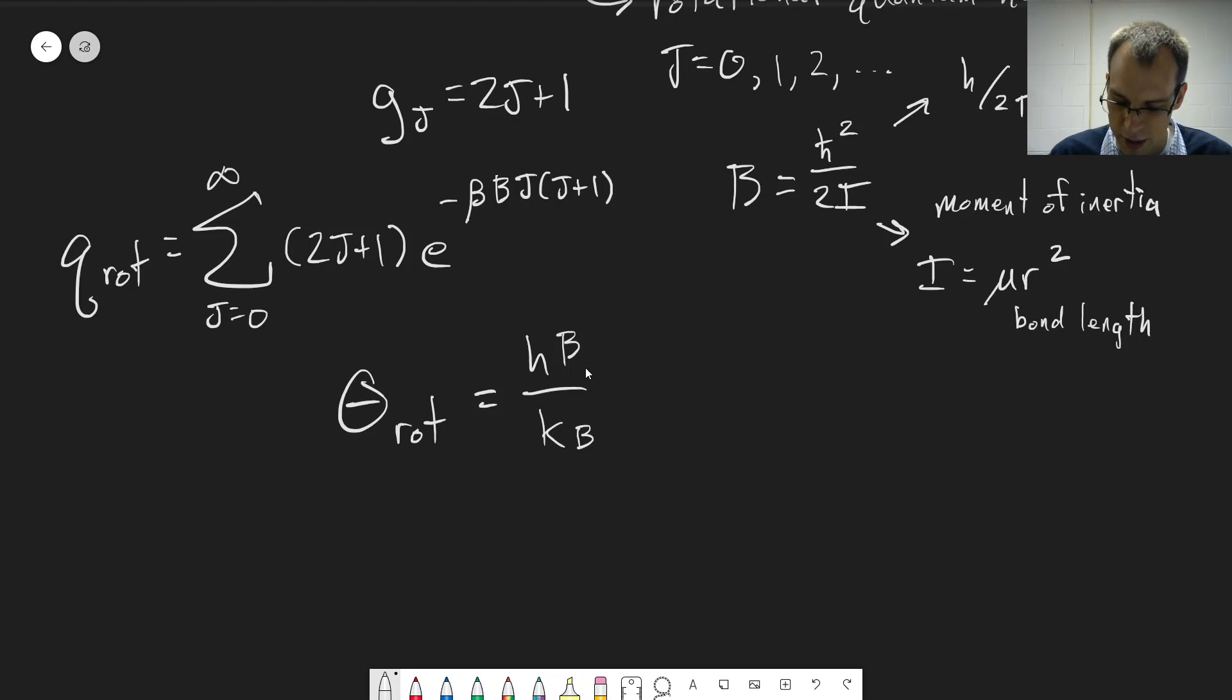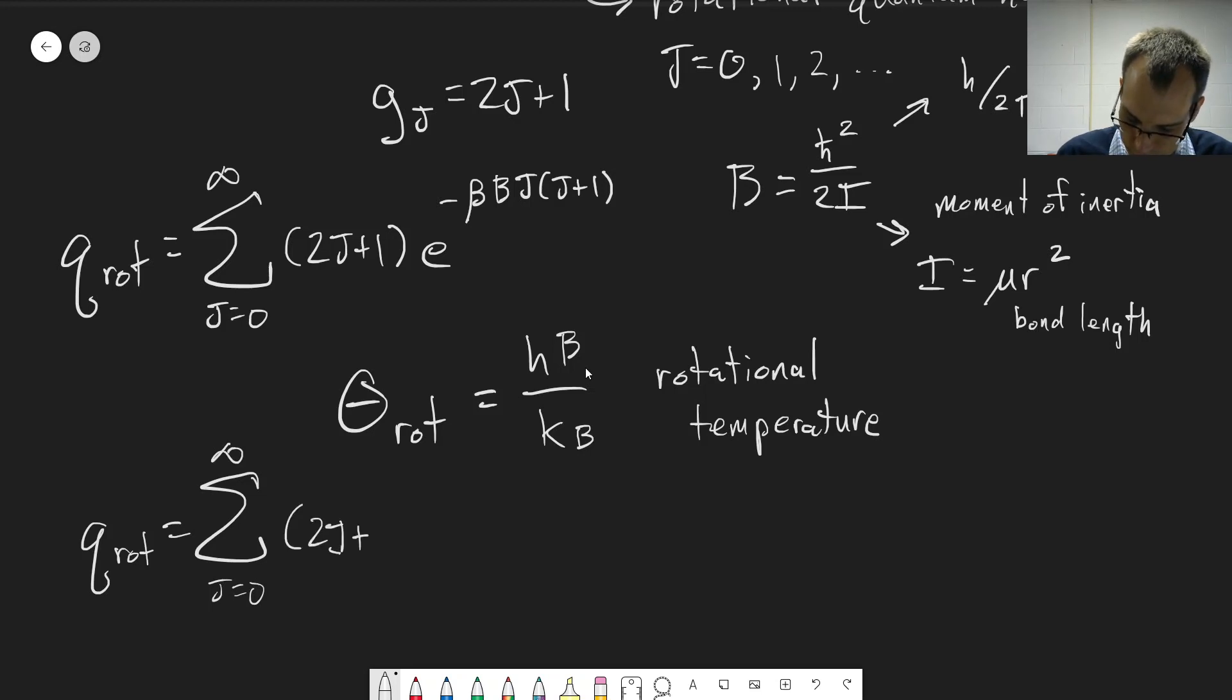The reason for doing this is this gives us something similar to what we saw for our vibrational temperature. It's a collection of constants that has units of Kelvin, so we'll get something in terms of T. And that gives us a slightly different version of this: Q rot is equal to the sum from j equals 0 to infinity of 2j plus 1 e to the minus theta rot times j times j plus 1 over T. So it collects all those constants except for temperature and the quantum number into its own constant.